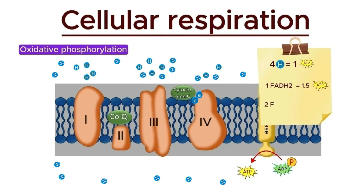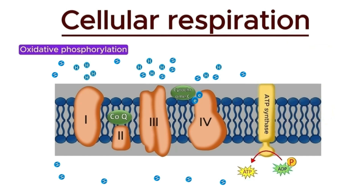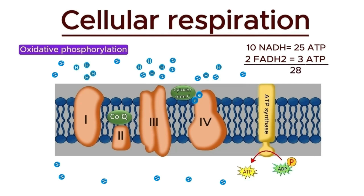Similarly, two FADH2 molecules produce about three ATP molecules. So by the end of the third stage, the twelve electron carriers — ten NADH and two FADH2 — collectively produce a total of 28 ATP molecules.